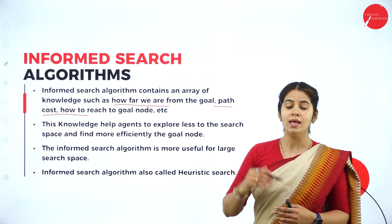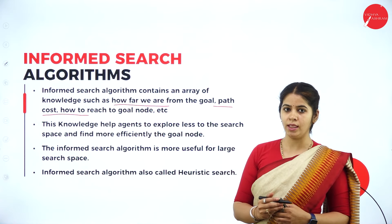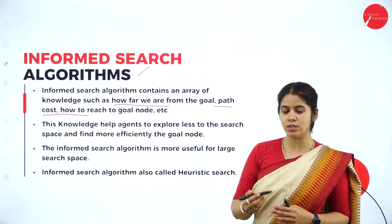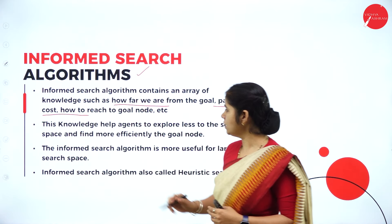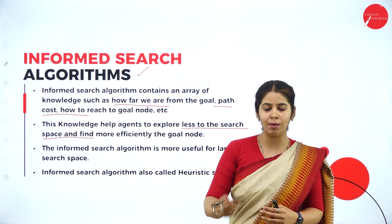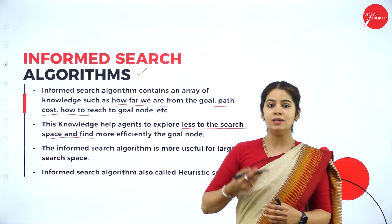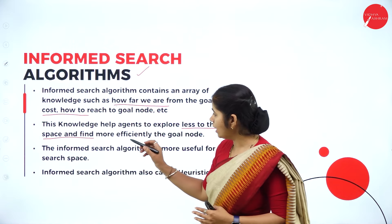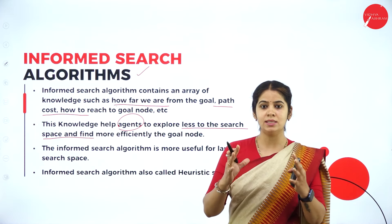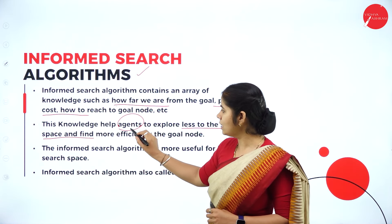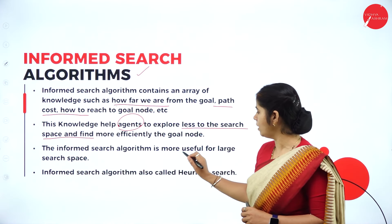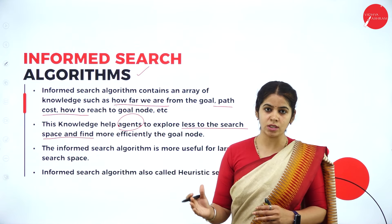What is the path and what is the cost to reach the goal node? Such information is provided to search a particular node in the given graph or tree — that is why we call it an informed search algorithm. This knowledge helps the agent to explore a lesser search space, making search very easy and very fast. The agent can limit his search for a particular space. Informed search algorithm is more useful for larger search spaces.